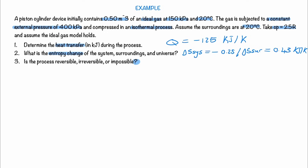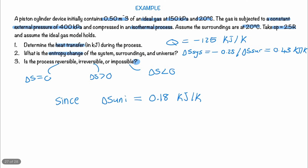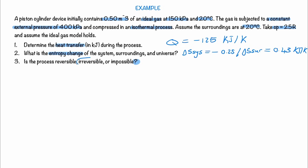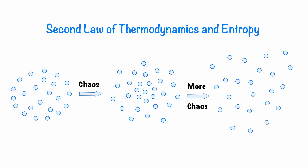The last question is interesting. We know that in a reversible process, the change in entropy of the universe is always zero; in an irreversible process, the entropy of the universe always increases; and if the entropy were negative or decreasing, the process would be impossible. Since the entropy of the universe increases here, the process is irreversible. Thanks for watching — I hope this video helped simplify entropy for you.